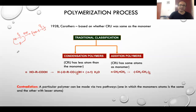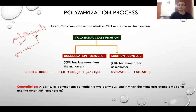If instead we use another monomer of the form H₂N-R-COOH to make polyamide, the constitutional repeating unit now has fewer atoms compared to the starting monomer. So this particular polyamide can be synthesized via the addition route or via the condensation route, demonstrating a clear ambiguity in this classification.